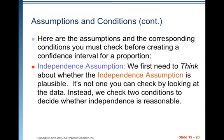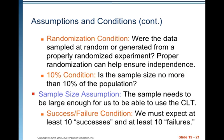Here are the assumptions and conditions to check before creating a confidence interval for a proportion. Independence assumption: check two conditions — the randomization condition (were data sampled at random or generated from a properly randomized experiment?) and the 10% condition (is the sample size no more than 10% of the population?). If the sample is small enough relative to the population, even a slight violation of independence won't greatly affect our calculations.